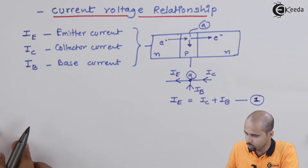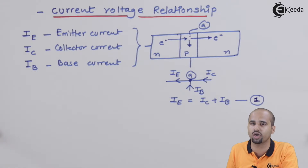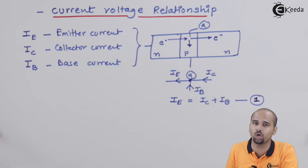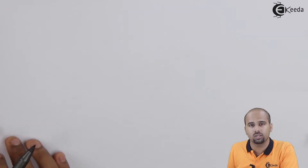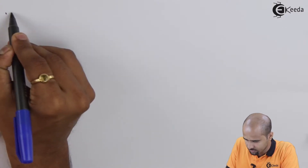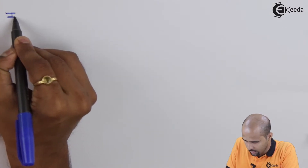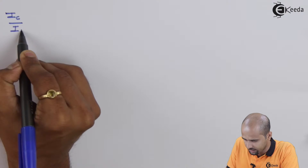Now we will move further. Do we have any other relationship — for example, the ratio of collector to emitter terminal current, or the ratio of base to collector terminal current? Let us see. The first ratio is IC divided by IE.